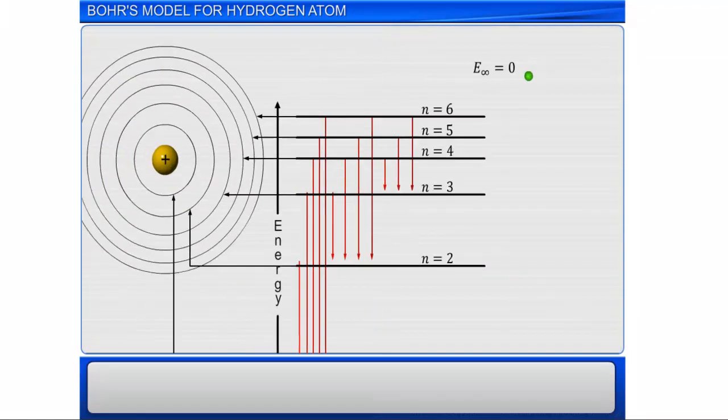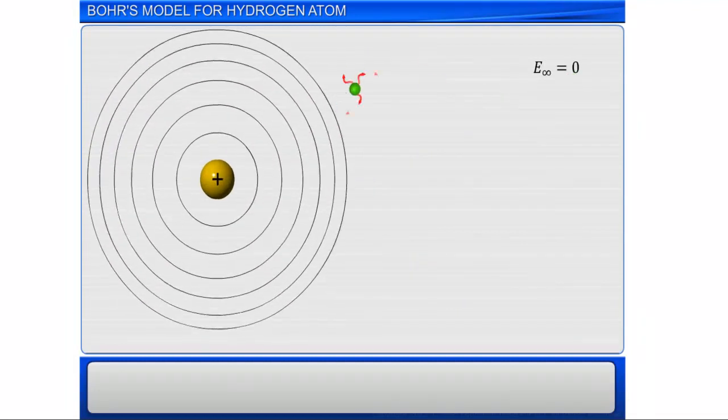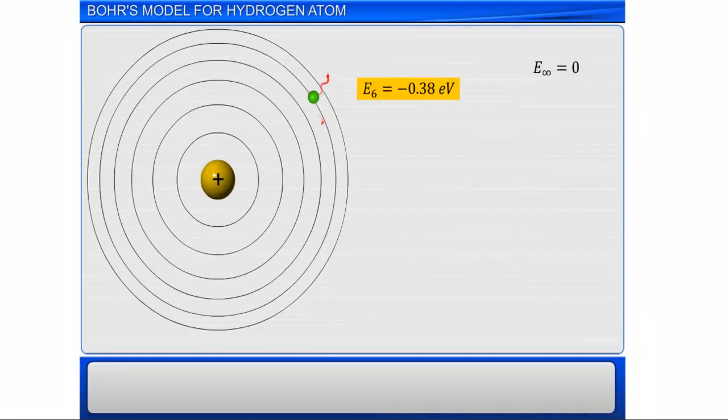Bohr's model also shows that the intensity of each spectral line depends upon the frequency or wavelength of photons absorbed or emitted.